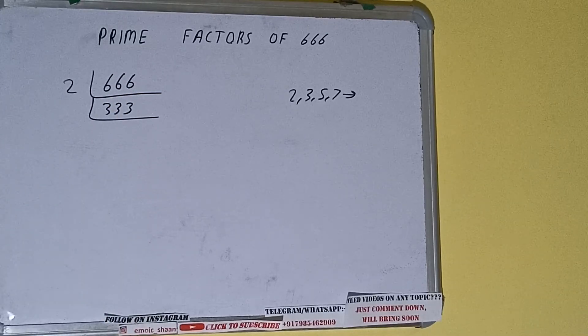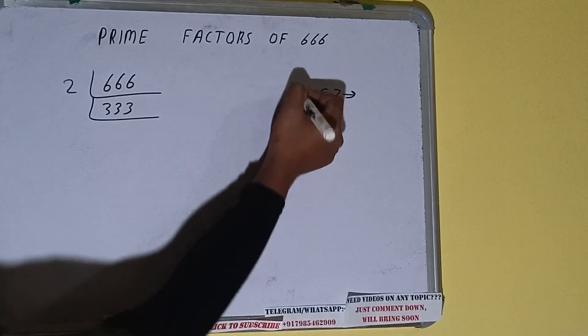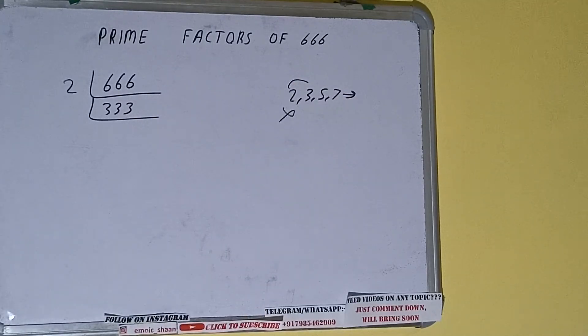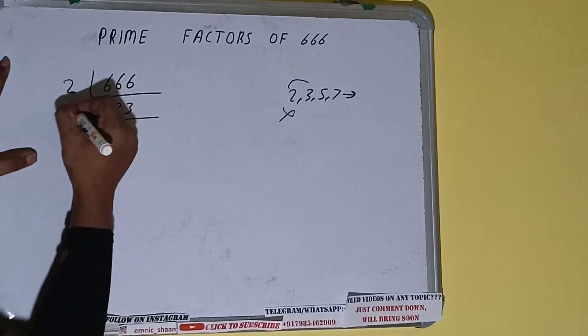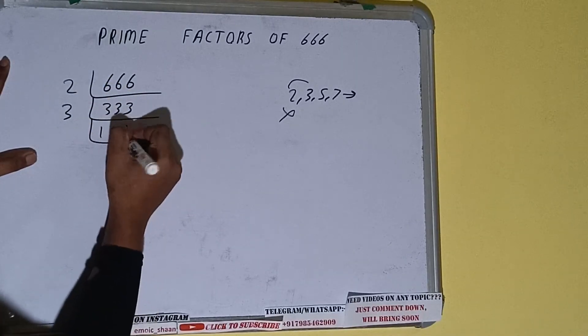Now this 333 is not divisible by 2 because it is an odd number so we'll check with the next lowest prime number that is 3. Is it divisible by 3? Yes it is so divide it and we'll be having 111.